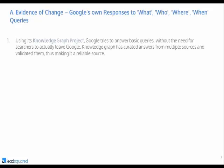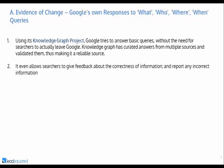We know Google's intent is toward context-based search because Google has announced it, and Google's own responses to questions like what, who, where, when queries give enough evidence. There is something called Knowledge Graph that Google uses to answer basic queries without searchers needing to leave Google. Knowledge Graph has curated answers from multiple sources and has validated them — it's a very reliable source. Google even allows searchers to give feedback about the correctness of information on Knowledge Graph, and users can report any incorrect information, making it very relevant to searchers.